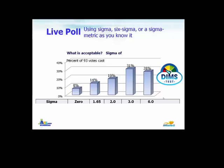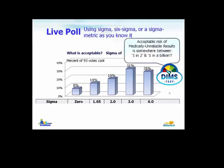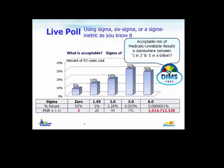Had the question been phrased differently, I think the answers would have been very different. If you translate the sigma values into the number of medically unreliable results, what we voted for was an acceptable risk somewhere between 1 in 2 and 1 in a billion. A sigma of zero is a 50% failure rate; a sigma of six is one in a billion. Wherever you set that sigma determines the percent of results that will fail and the number of medically unreliable results. Saying you'd accept a sigma of zero means you'd accept one in two results being medically unreliable.